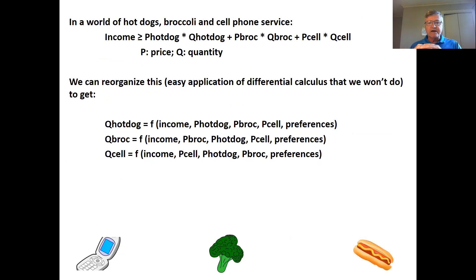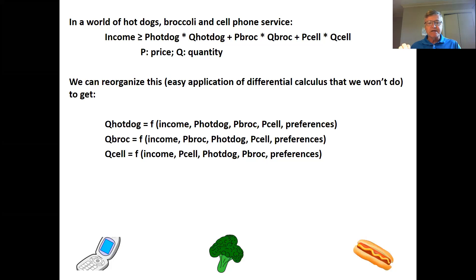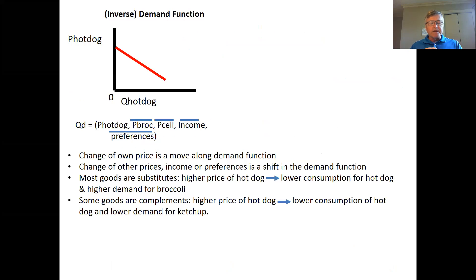We do some differential calculus on that problem of maximizing happiness from consuming hot dogs, broccoli, and cell phones. We get the first order conditions, solve for these three variables, and get a relationship between quantity demanded of hot dogs, broccoli, and cell phones as a function of income, the prices of the three goods, and our preferences. One thing we like to do in economics is isolate some dimensions of that function — let's fix prices of broccoli and cell phones, income, and preferences, and look at the relationship between quantity demanded of hot dogs and the price of hot dogs.